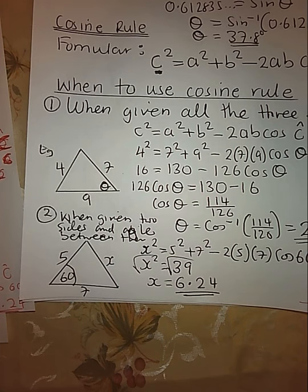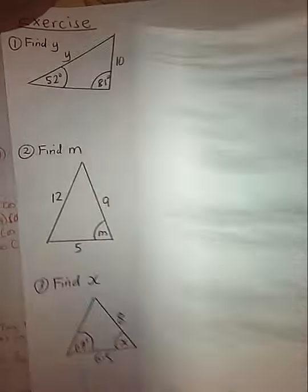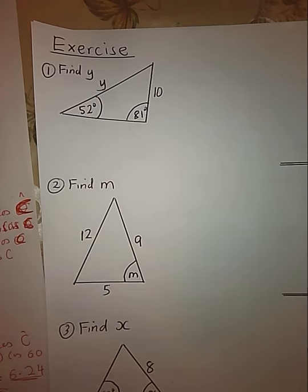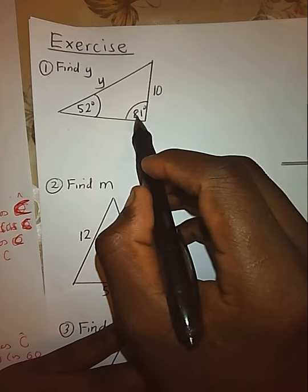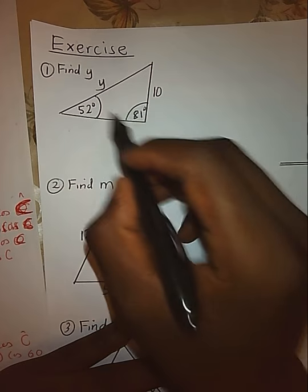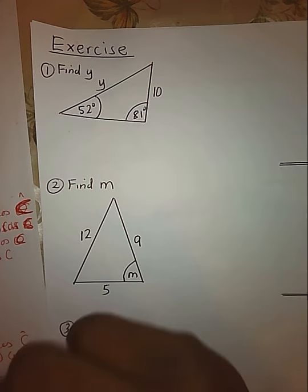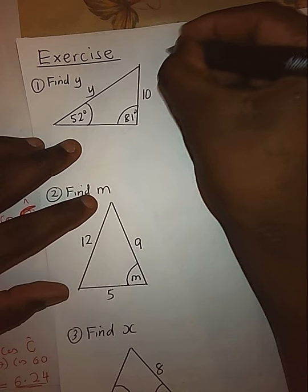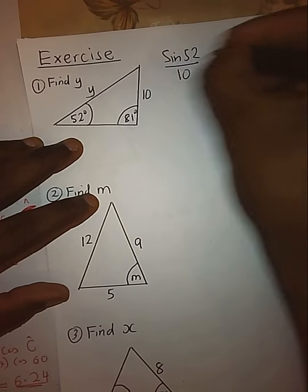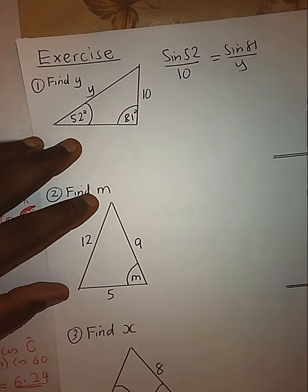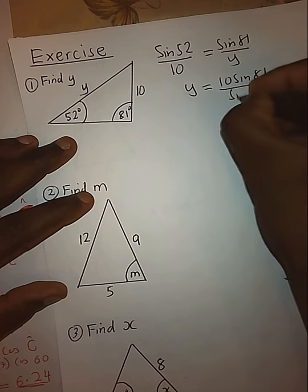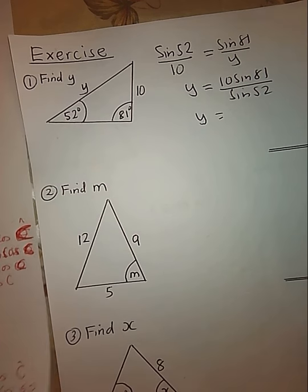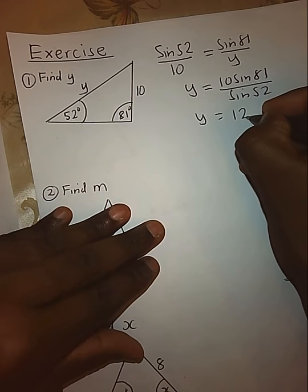Now that we have seen the cosine rule and sine rule, let's look at some examples. In question number one, we have an angle and its opposite side given, and another angle with the side we need to find. This fits the condition for using the sine rule. We take sine of 52 over its opposite side equals sine of 81 over its opposite side, and solving gives us 12.5 to three significant figures.